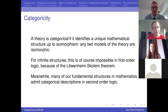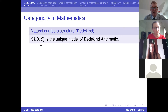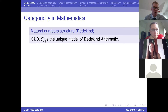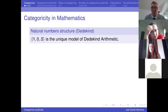So categoricity is generally talked about in connection with second-order theories, and most of our fundamental structures in mathematics have these kind of categorical descriptions in second-order logic. For example, the natural numbers have a categoricity result due to Dedekind. If I have the natural numbers with zero and successor — in the Dedekind arithmetic language where you have only zero and successor — the theory says zero is not the successor of anything, the successor function is one-to-one, and then the second-order induction axiom says that any subset containing zero and closed under successor contains everything. Dedekind proves that uniquely characterizes the standard model.